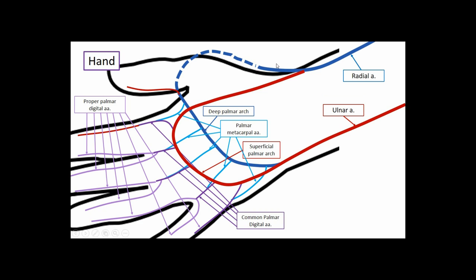A few remaining arteries: the radial artery gives off the nutrient artery to the scaphoid — the most lateral and proximal carpal bone. The blood flow loops distally and then returns proximally, so a fracture of the scaphoid can interrupt blood flow to the proximal portion, causing avascular necrosis of the scaphoid, which is called retrograde flow disruption.